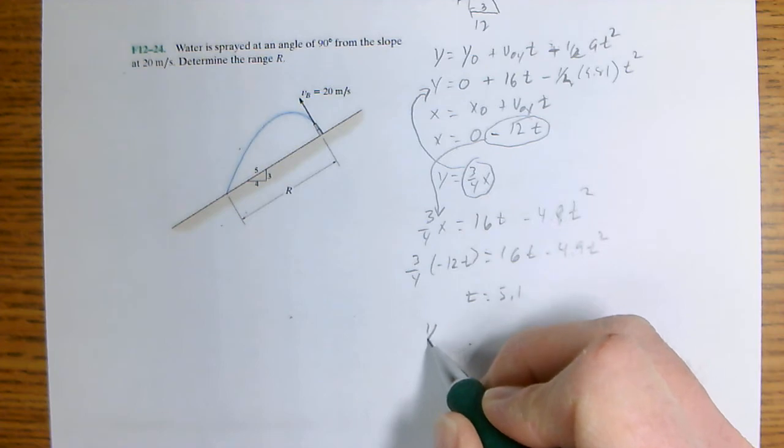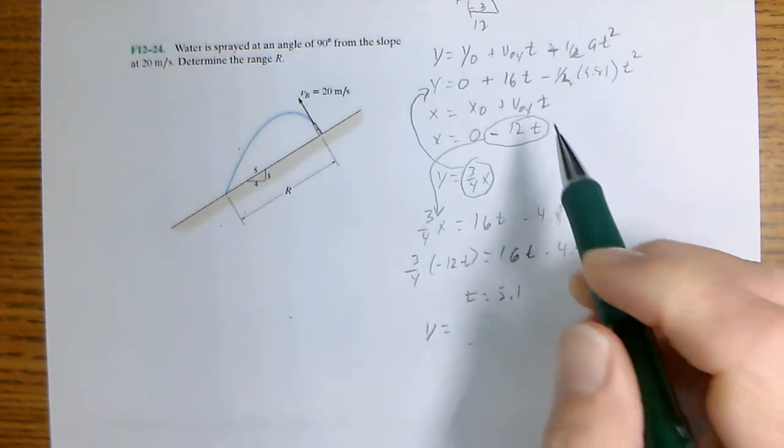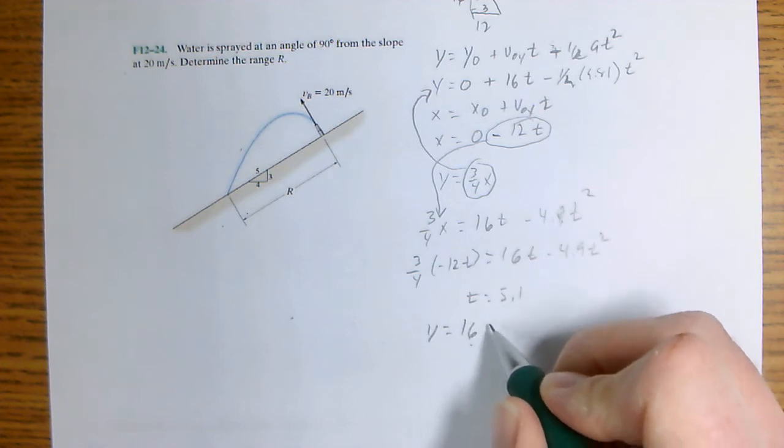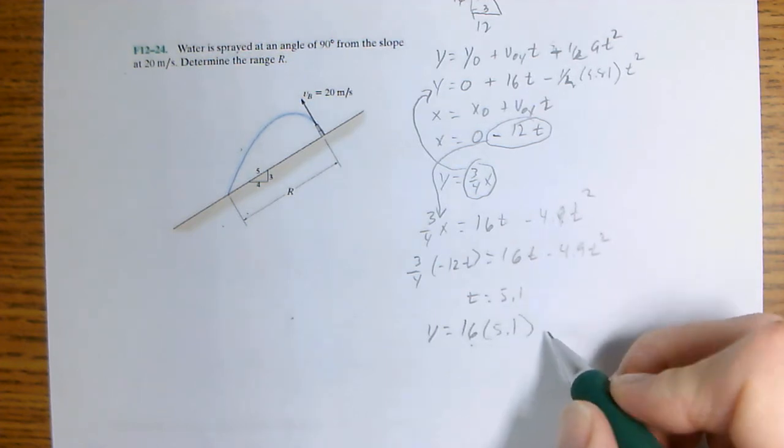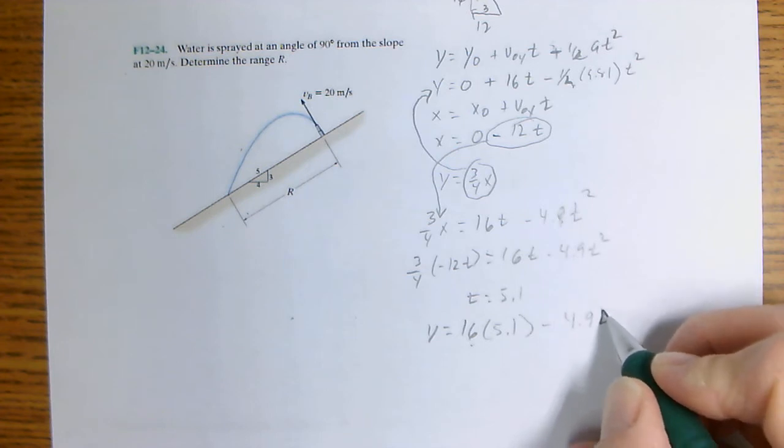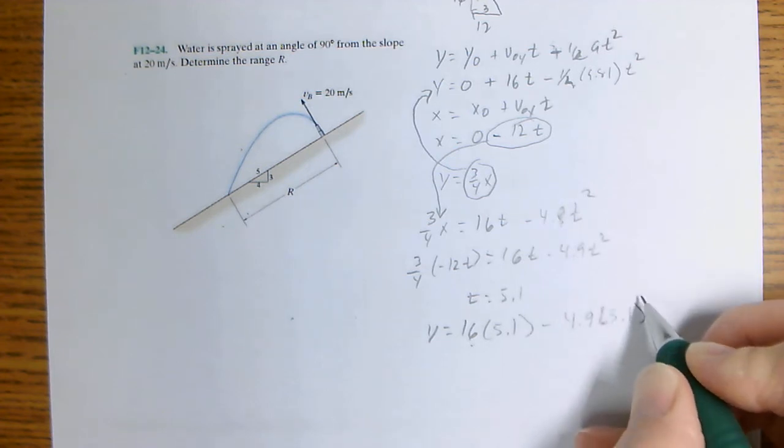So Y equals, going back here, Y equals 16 T times 5.1 minus 4.9 T times 5.1 squared.